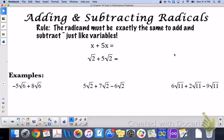Okay, adding and subtracting radicals. The rule: the radicand must be exactly the same to add and subtract, just like variables. When we did combining like terms back in chapter one, x plus five x - we have one x plus five x - that gives you six x.